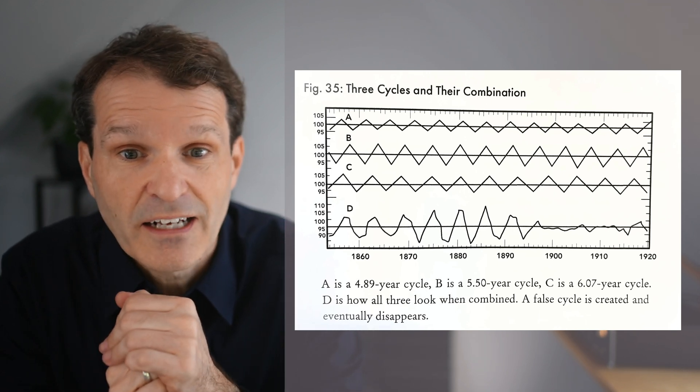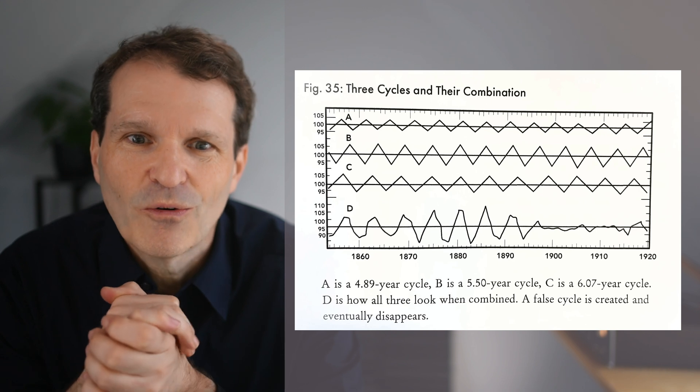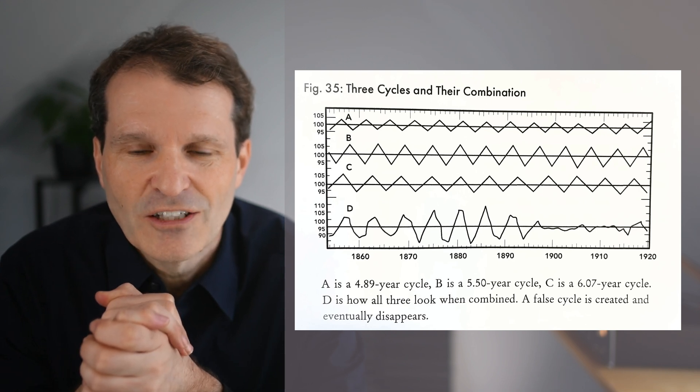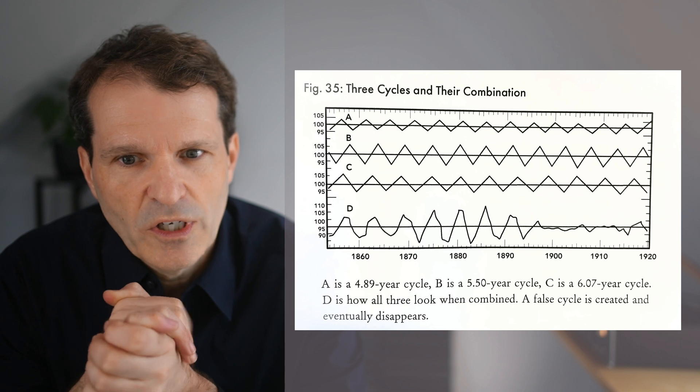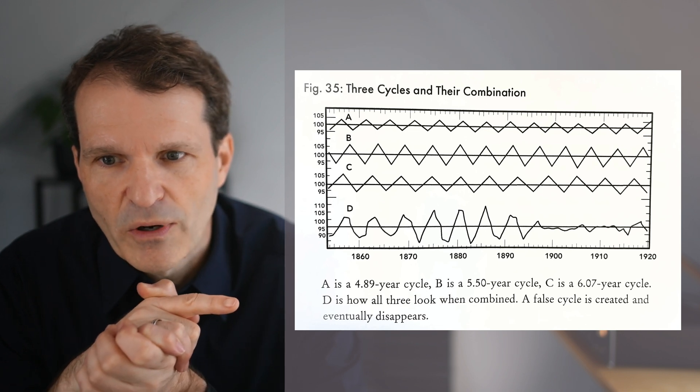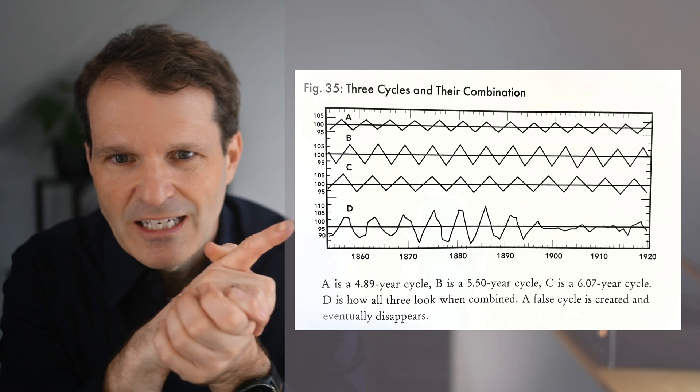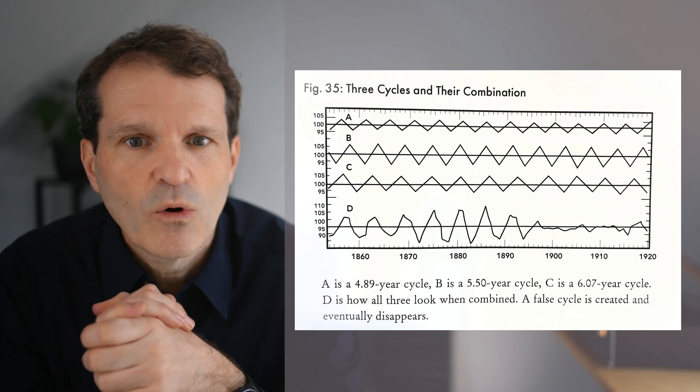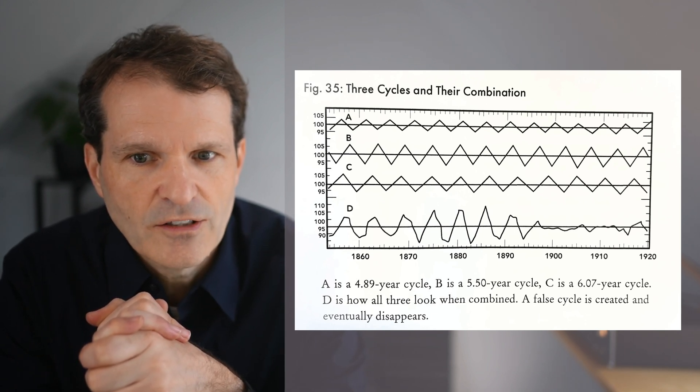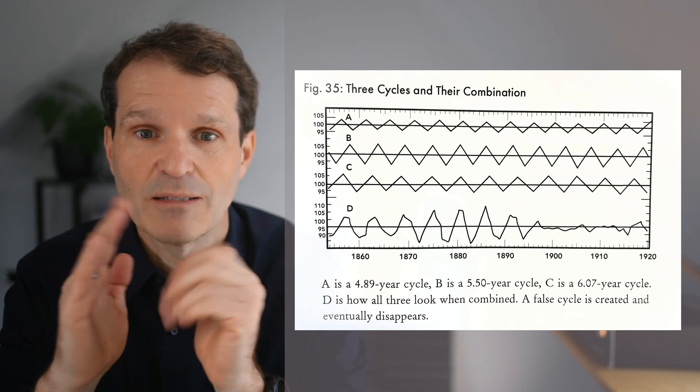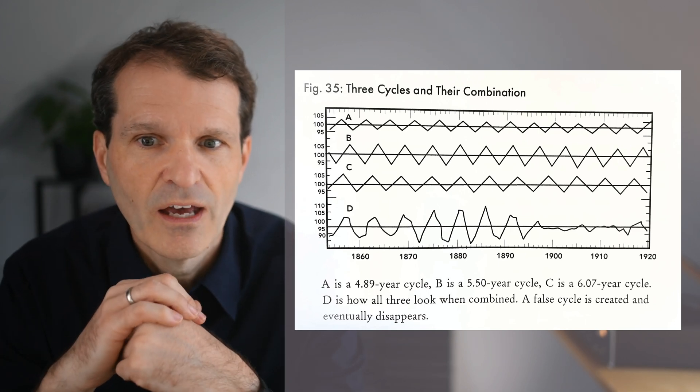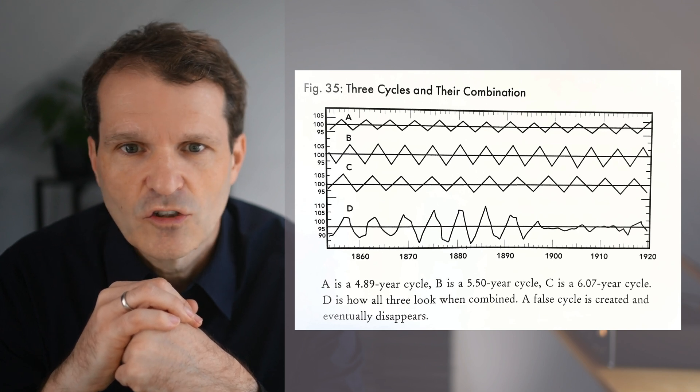Why does this cycle disappear? Why was our prediction wrong? Why did we see this cycle in the past but from the year of 1900 that cycle disappeared? What we see here as D is a so-called false cycle.